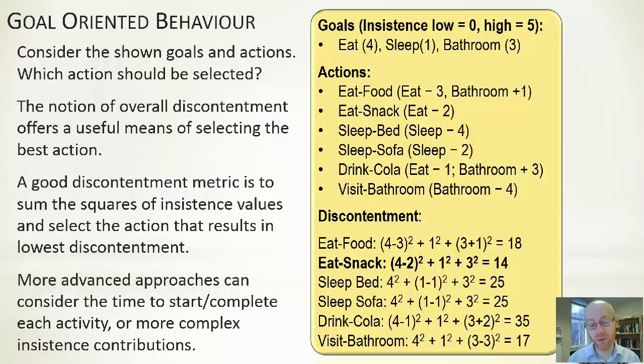You can see there that if we eat some food, four minus three, it'll go down to one. We'll square that, we'll get one. Our sleep insistence doesn't change, so it remains one, we'll square it. And our need to go to the bathroom will increase by one, so it'll be three plus one, we'll square it and we'll get 16. So in this case, it would be one plus one plus 16, we'll have an overall net discontentment of 18. If we eat a snack, it's four minus two, so two squared plus one squared plus three squared, we'll get an overall discontentment of 14. You can add this up for each of them and then you get your net overall discontentment. You can see for this particular scenario, eating a snack is the best thing to do at this point in time. And that's the action you would take.